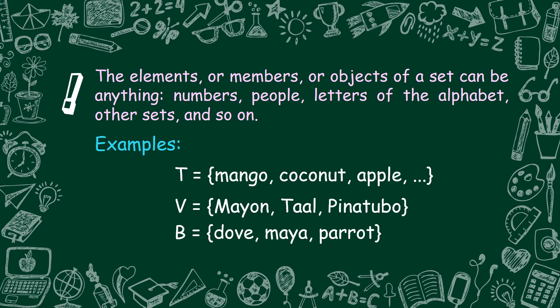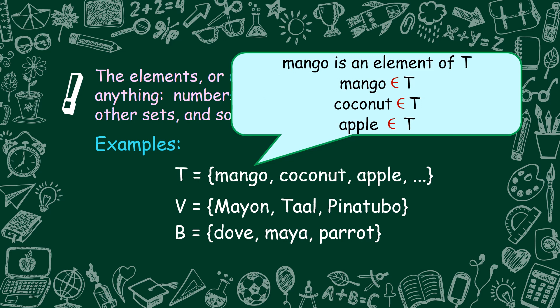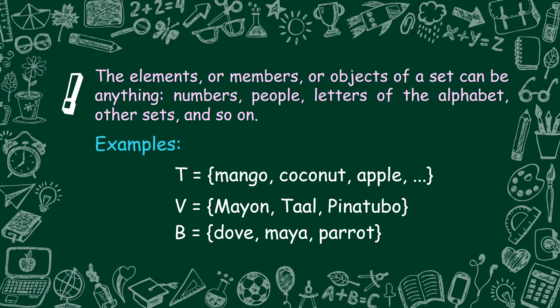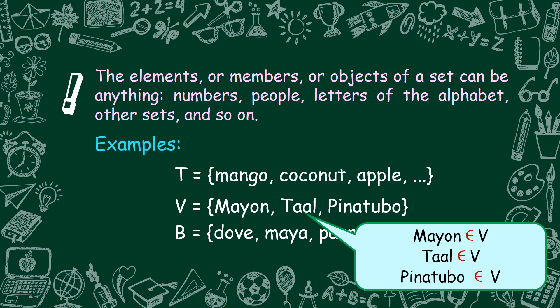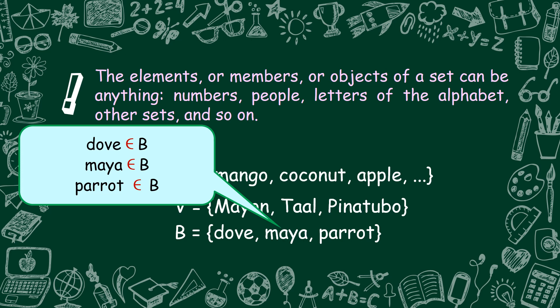And the last example: B is equal to dove, maya, and parrot. This set is a set of birds. Remember the symbol for the element? Mango is an element of T. Coconut is an element of T. Apple is an element of T. For Set V: Mayon is an element of V. Taal is an element of V. Pinatubo is an element of V. And here are the elements for Set B — don't forget our symbol for the element.